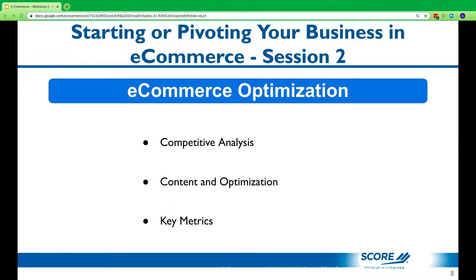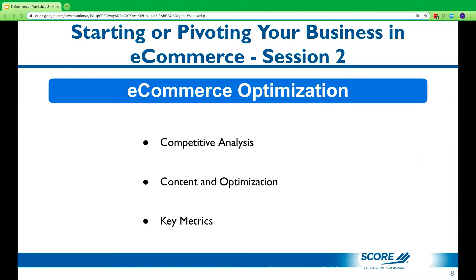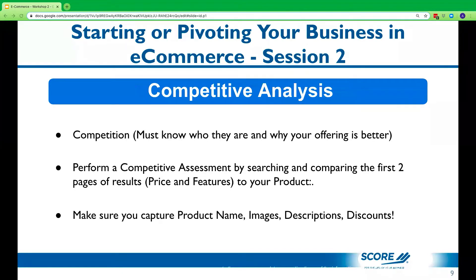So what are we going to cover in session two? When we talk about e-commerce optimization, the competitive analysis piece is as critical a building block for your e-commerce activity as anything you'll do. Then we'll go into content and optimization. We'll talk about key metrics — how do you assess whether or not you are successful at the efforts that are going on? These metrics will be focused around the e-commerce side of your business.